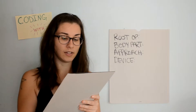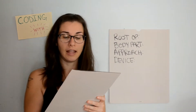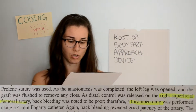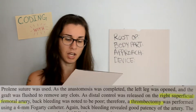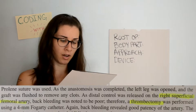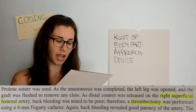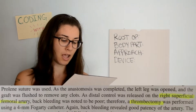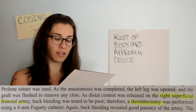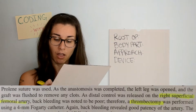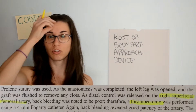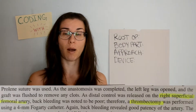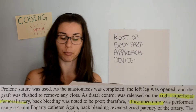The anastomosis was begun — they were sewing and connecting the graft to the anastomotic site on the left femoral artery and left superficial femoral artery, using a running 6-0 Prolene suture. The left leg was opened and the graft was flushed to remove any clots. As distal control was released on the right superficial femoral artery, back bleeding was noted to be poor. Therefore, a thrombectomy was performed. Thrombectomy is not integral to a femoral bypass graft procedure — it is removing a thrombus or blood clot, so that is a separate procedure.